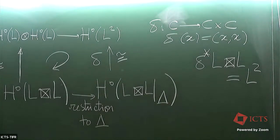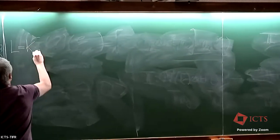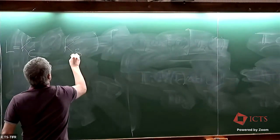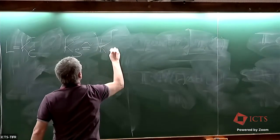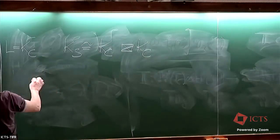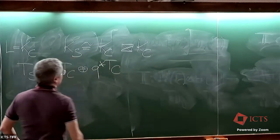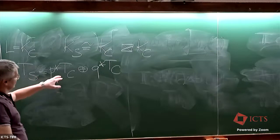Now let's do this for the canonical bundle of the surface. For L equal to the canonical bundle, the canonical bundle of the surface is isomorphic to this product. This comes from the fact that the tangent bundle is the direct sum of the tangent bundles of the two factors, so taking the determinant one gets this.